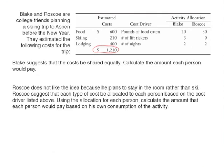Blake suggests that the cost be shared equally. To calculate this, we take the total estimated cost of $1,210 and divide it by the number of people, which is two. The amount allocated to each person is $605 each.